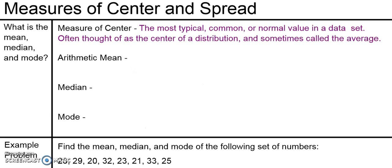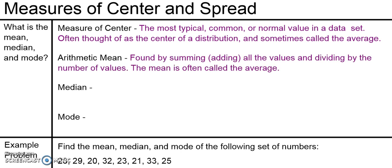There are actually three different ways to measure the center of a data set. The first way is called the arithmetic mean. That's found by summing, or adding up, all the values and dividing by the number of values you have. The mean is often called the average, and this is the one you're probably the most familiar with.